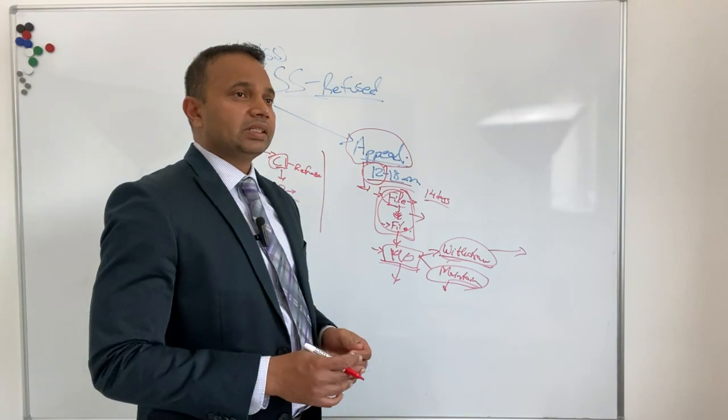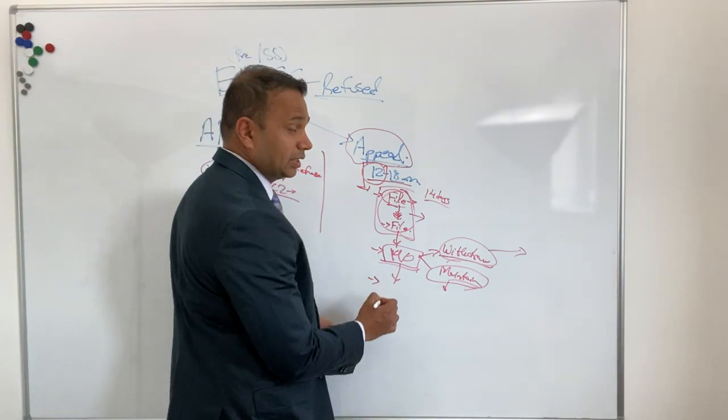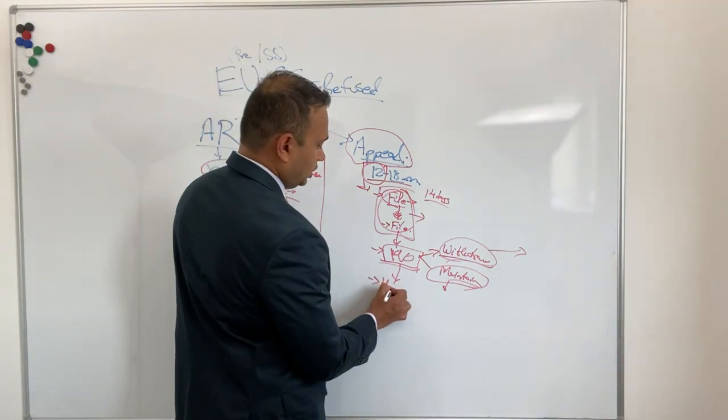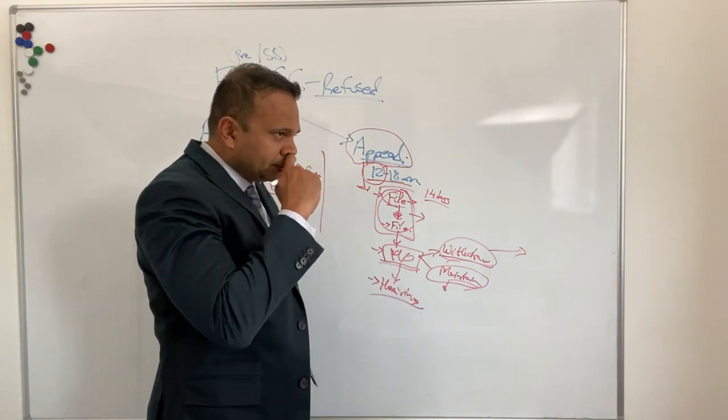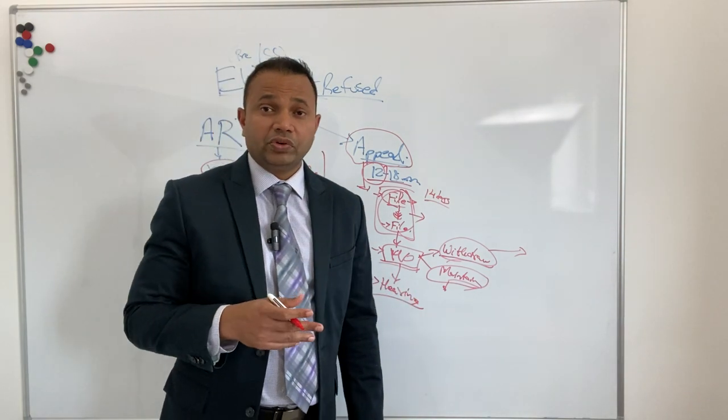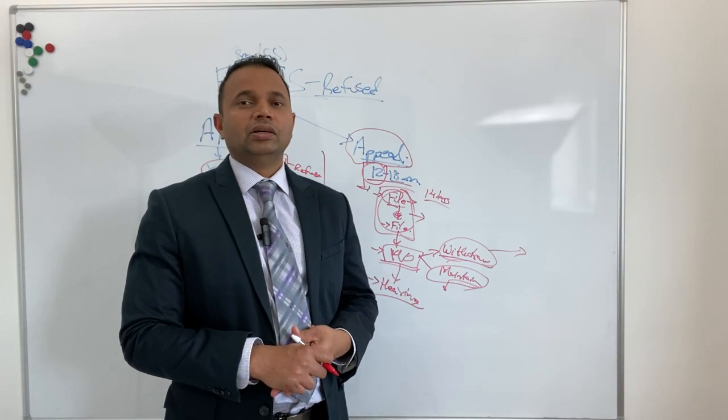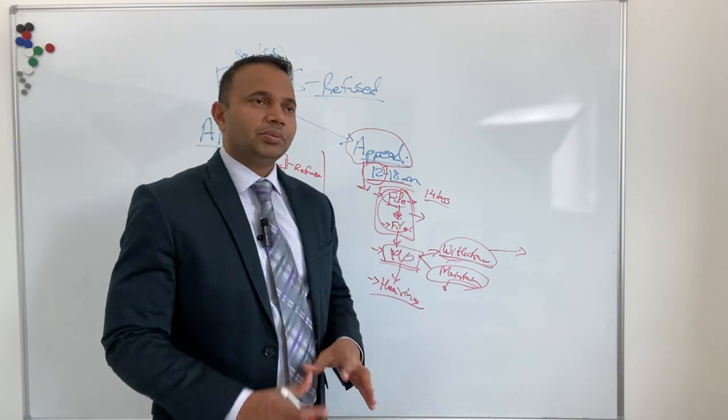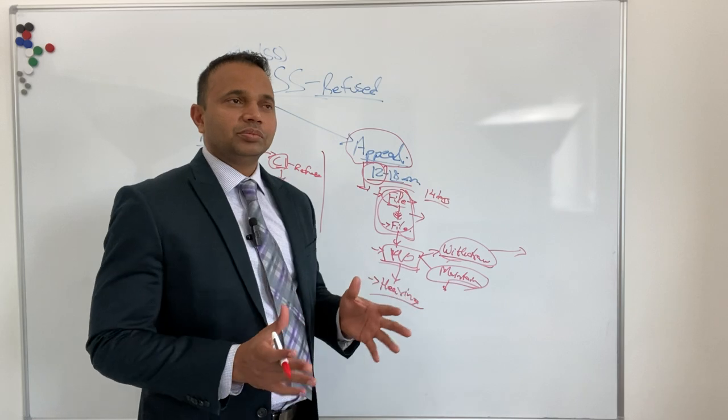Once the appeal is listed for hearing, at that point also some documents can be filed. They will always ask both parties to file their documentation. All this is done by us if you are doing it. I'm summarily trying to explain how the steps work.